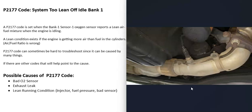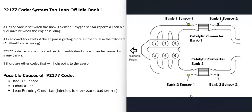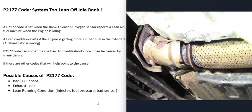The basics of O2 sensors: there are two on each bank of the engine. Sensor one is located before the catalytic converter and is also called the upstream O2 sensor. Sensor two is located after the catalytic converter and is called the downstream O2 sensor — sensor two mainly helps monitor the catalytic converter. So the main sensor to check when you get this P2177 code is the bank one sensor one O2 sensor.